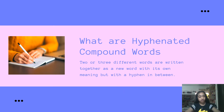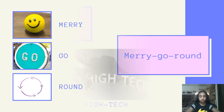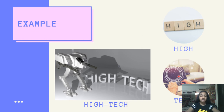What are hyphenated compound words? When two or three different words are written together as a new word with its own meaning but with a hyphen in between, they are hyphenated compound words. Like in open compound words there is a space in between, but in hyphenated compound words there is a hyphen. For example, we have three different words: merry, go, and round. When we put them together, they make merry-go-round with a hyphen in between. Another example is high and tech — high-tech is spoken together but written with a hyphen in between, making it a hyphenated compound word.